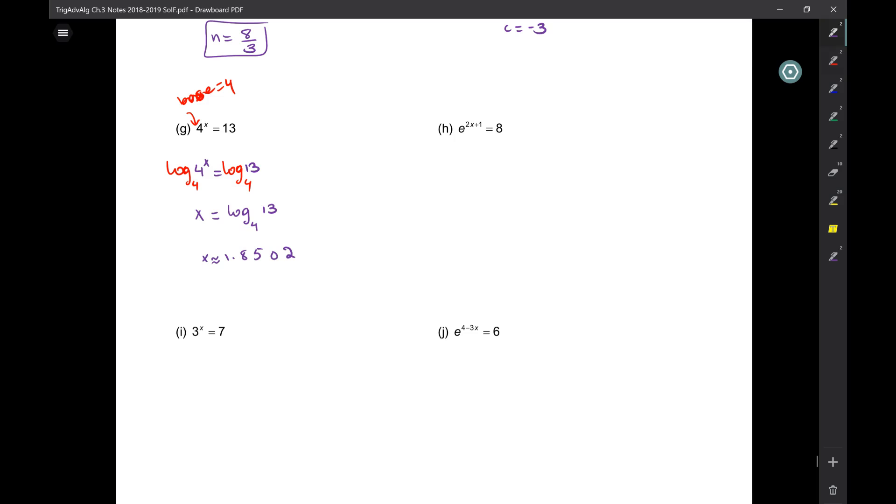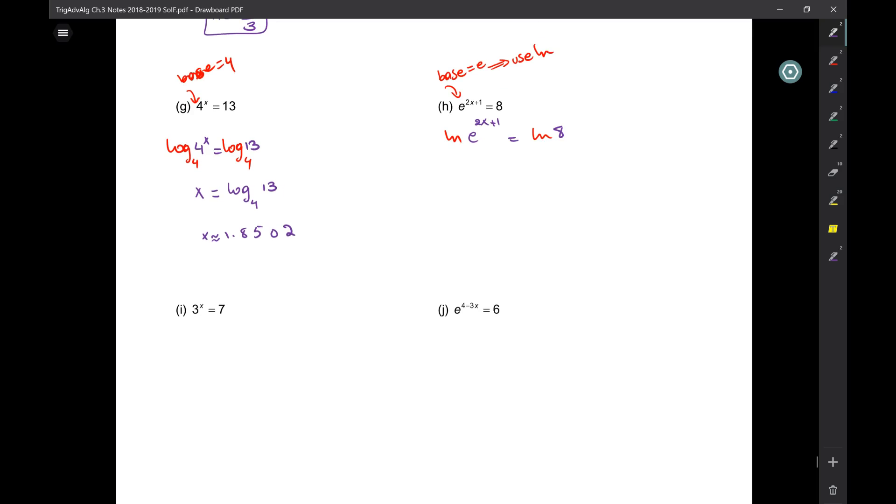What about this next one? What's the base here? Base is E. So what do we use? LN. Good. So it's going to be LN of E to the two X plus one equal to LN of eight. And here I'm just going to be left with two X plus one equal to LN of eight. I'm not done yet, because I have to solve for X. So what do I do now?